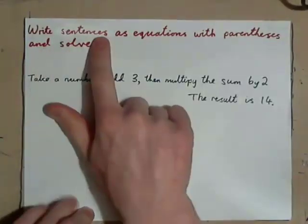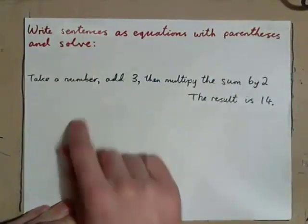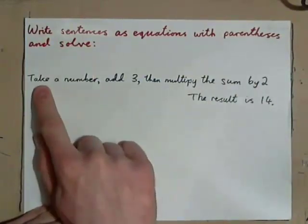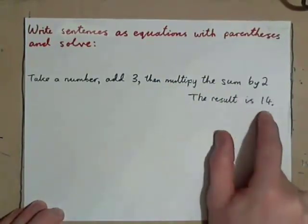Let's have a look at writing sentences as equations with parentheses, and then solving. So, take this example: take a number, add 3, then multiply the sum by 2. The result is 14.